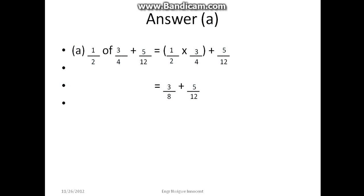After getting our LCM, the LCM is 24. 8 divided by 24 gives us 3, 3 times 3 is 9. 12 divided by 24 is 2, 2 times 5 is 10. The numerator becomes 9 + 10 over 24, which gives us 19/24.